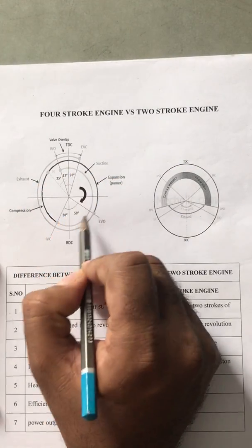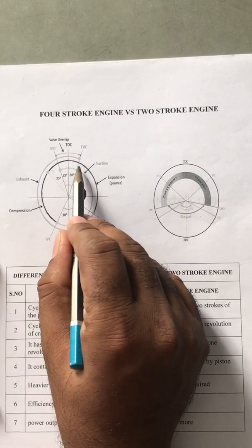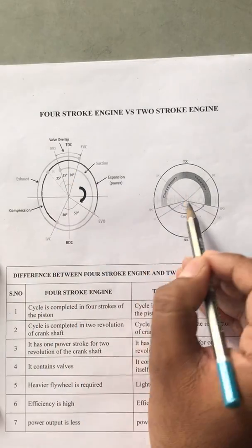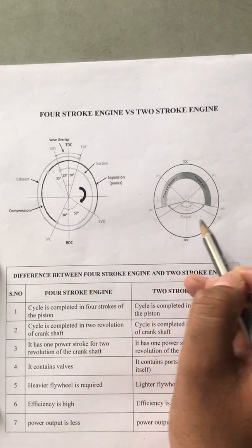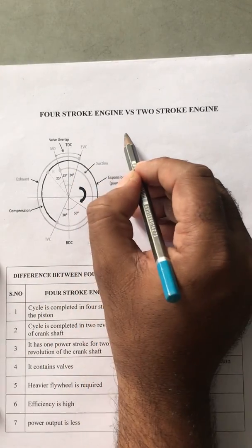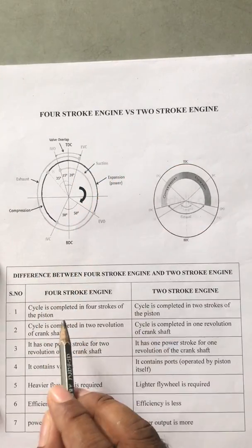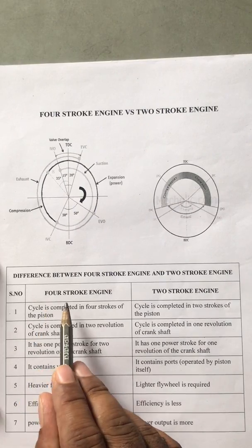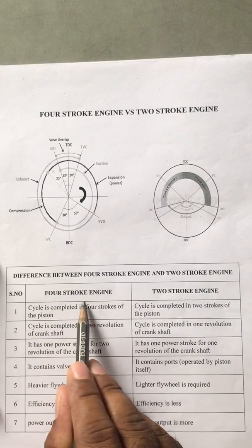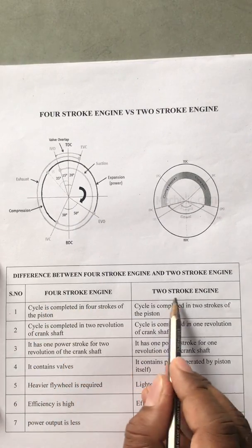This is the valve timing diagram for the 4-stroke engine. This is the port timing diagram for the 2-stroke engine. The basic difference is: this is a 4-stroke engine, and this is a 2-stroke engine.